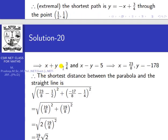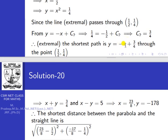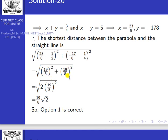From the extremal x + y = 3/4 and the given line x − y = 5, solving these two equations gives x = 23/8, y = 17/8. The shortest distance between the parabola and the straight line is between (1/2, 1/4) and (23/8, 17/8). Computing this distance gives 19√2/8, so option 1 is correct.